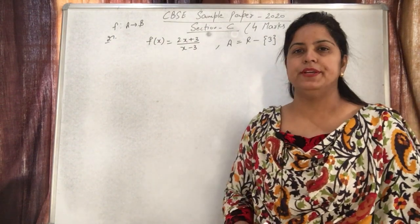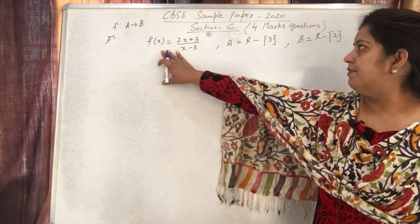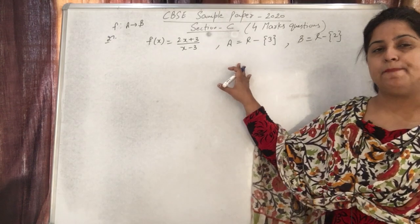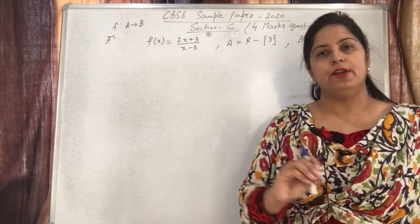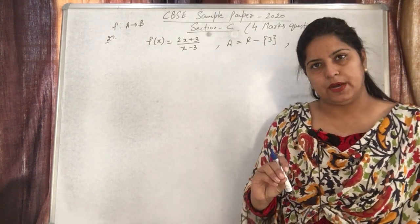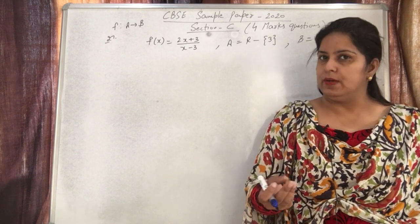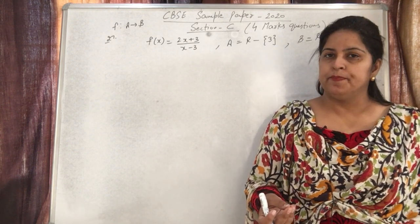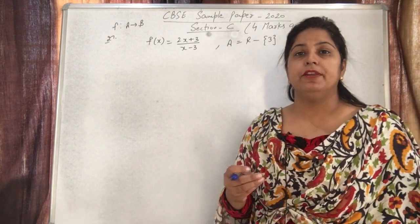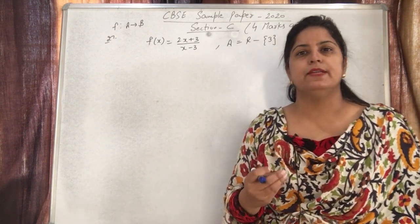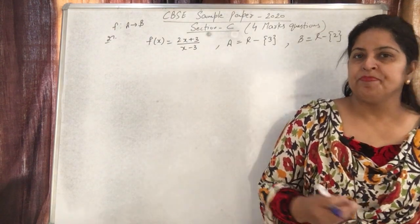This is an NCERT question — an easy question. A function is given and we have to check whether it is 1-1 and onto, then check whether it is invertible, and if the inverse exists, find what it is.